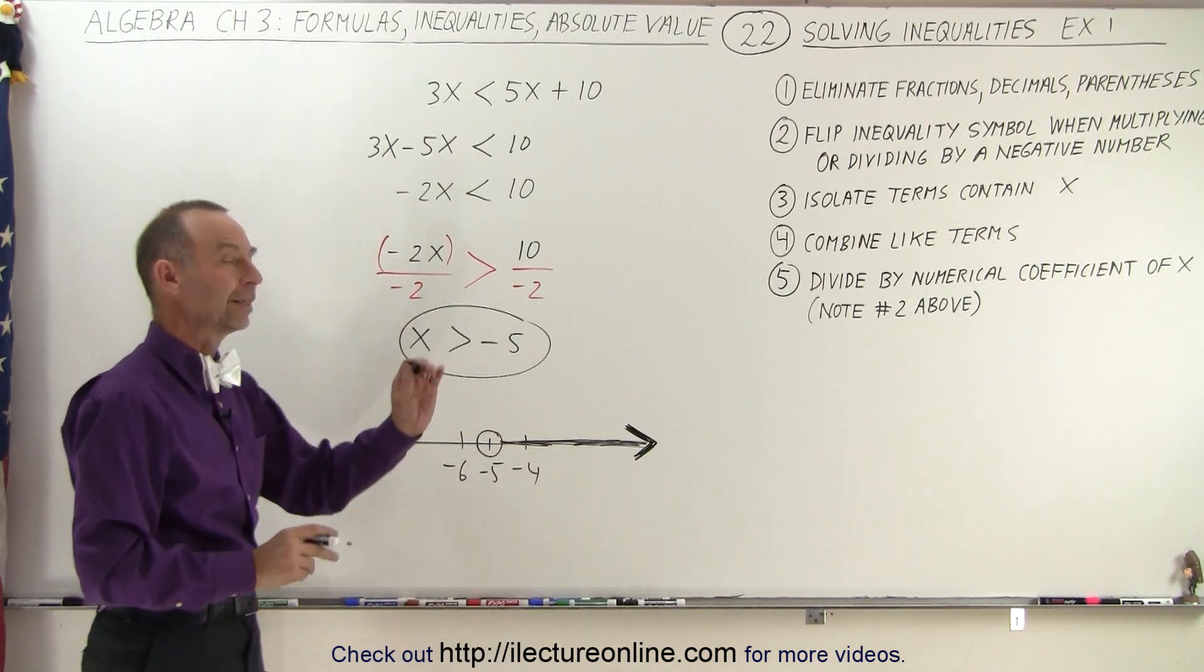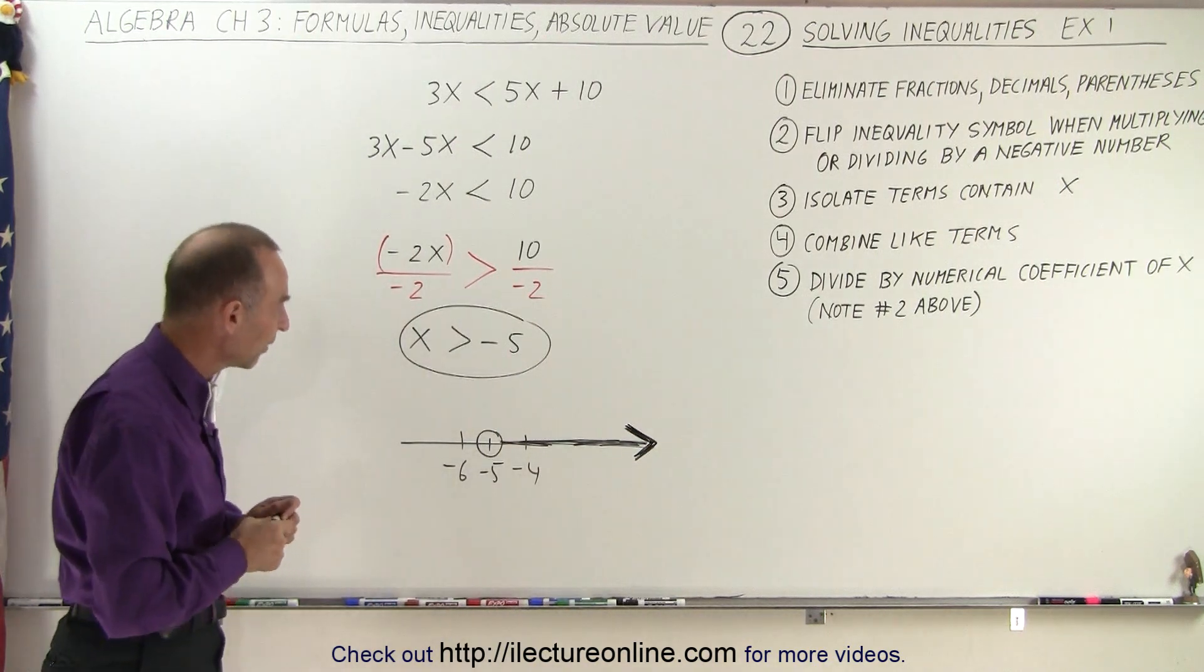So this then would be the region or the number points. All points to the right of negative 5, greater than negative 5, satisfy the inequality.